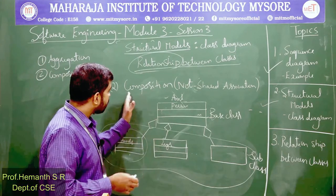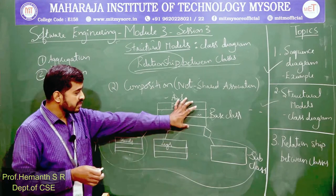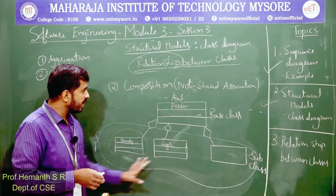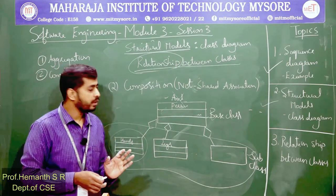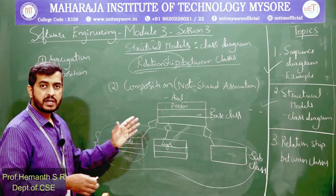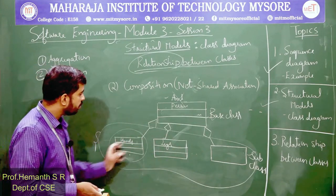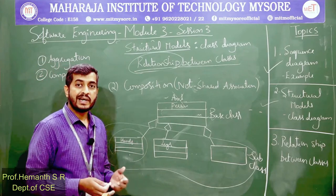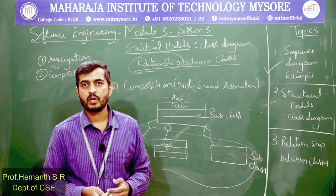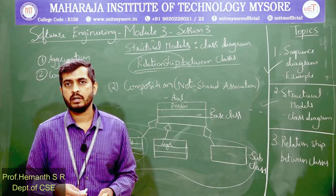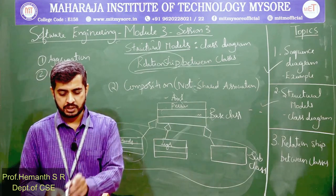In the composition relationship, all subclasses together realize the composition of the base class, and the subclasses cannot exist independently of the base class. This is a tightly coupled, strongly associated relationship — you cannot separate the subclass from the base class. That is the composition relationship.